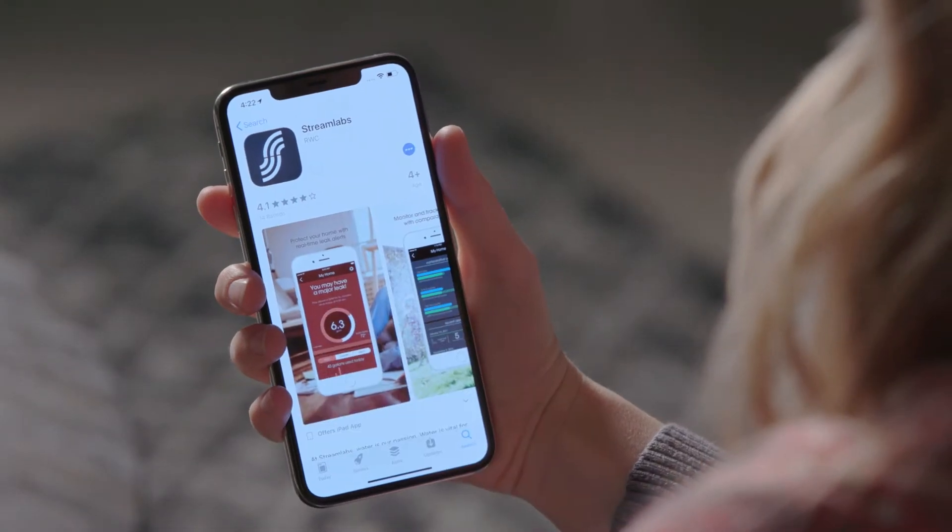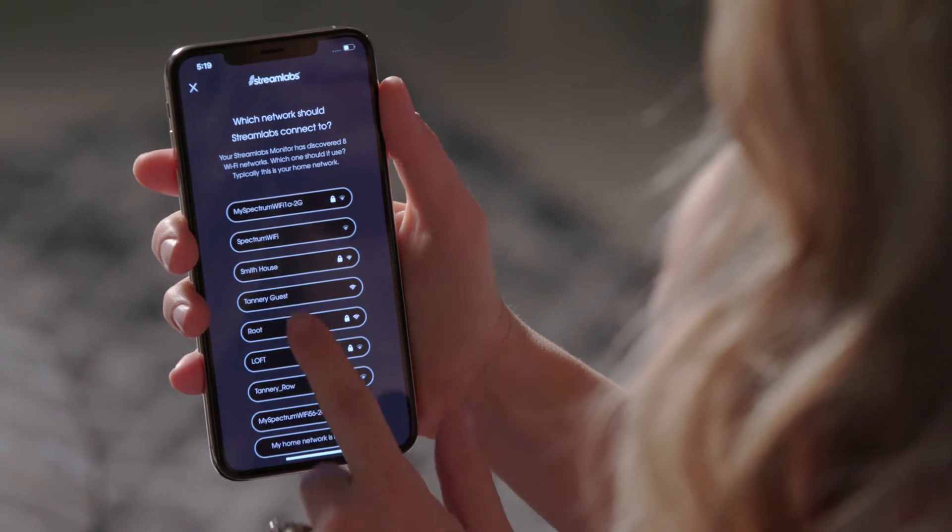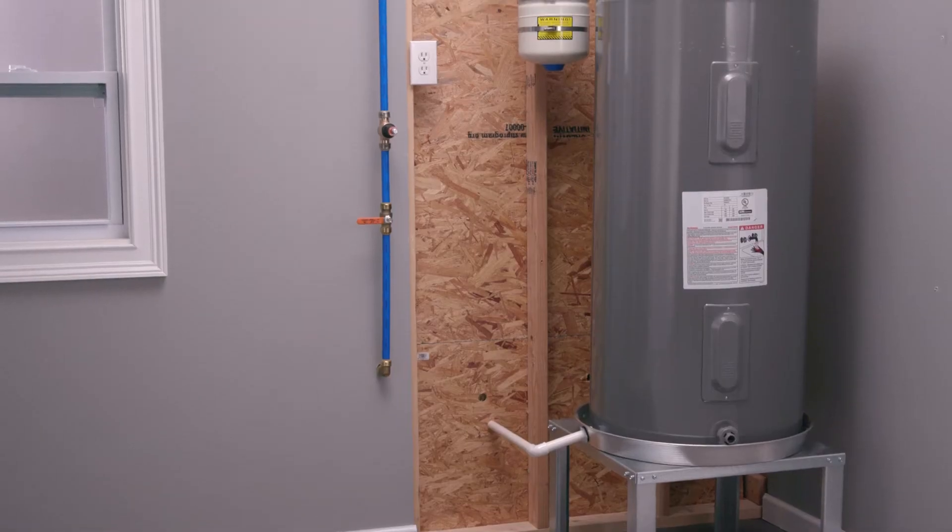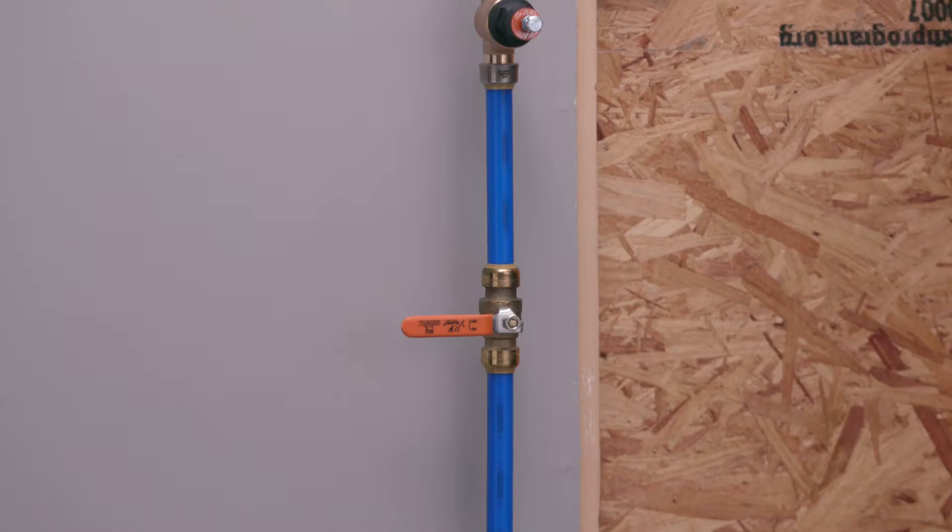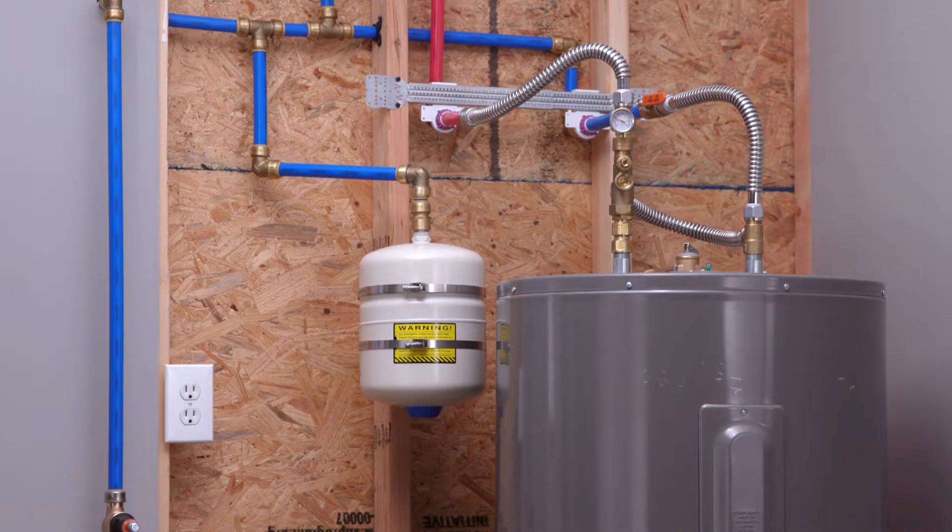Now that you have installed the StreamLabs app and connected the monitor to Wi-Fi, locate the main water entry line in your basement, utility closet, garage, or crawl space. The main water entry line is typically near your water heater.